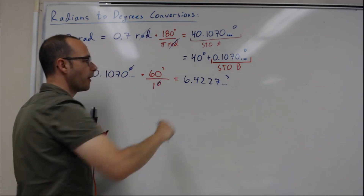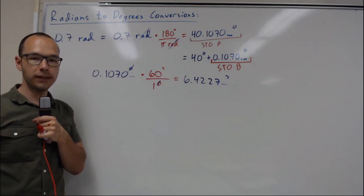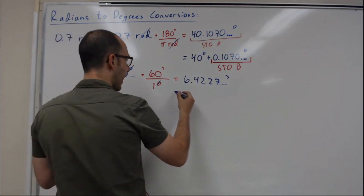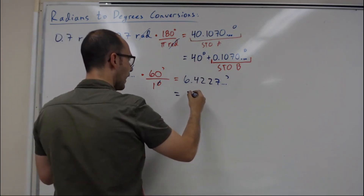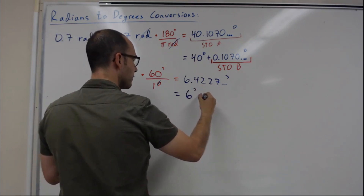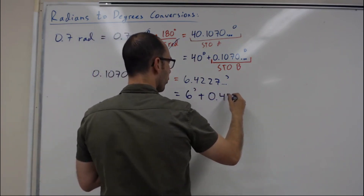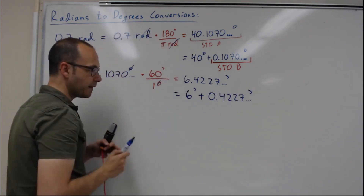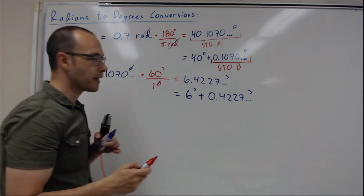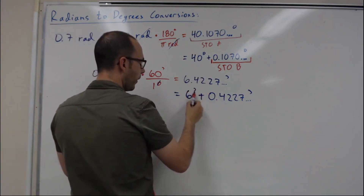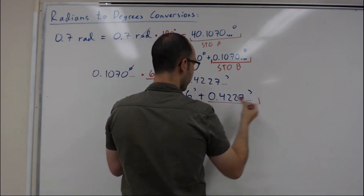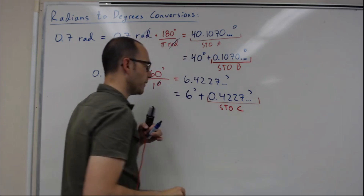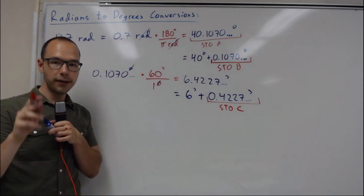We have the number of minutes from 0.1070 degrees. We can rewrite that, just like we did for the number of degrees, as 6 minutes plus 0.4227... minutes. I write it this way because I'm going to keep the whole number part and convert the decimal part. I'll store that decimal part into memory C.